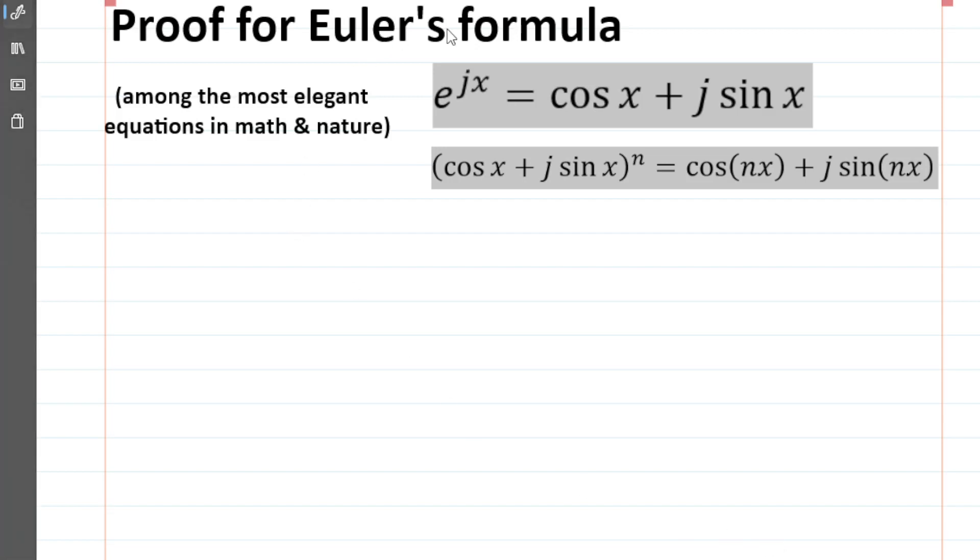Here's a simple proof for Euler's elegant formula: e^(jx) = cos(x) + j*sin(x), and a consequence of that: (cos(x) + j*sin(x))^n = cos(nx) + j*sin(nx).